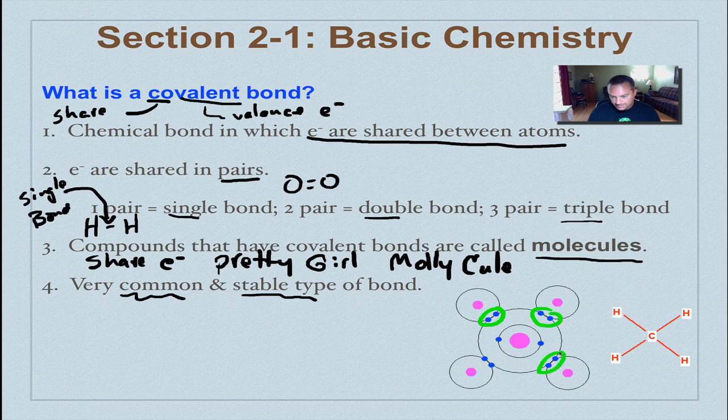We can also draw the shared electrons this way, where that line equals one pair of electrons, just like was drawn up in here. And this here, also, you can see CH4. This one's also methane or natural gas.